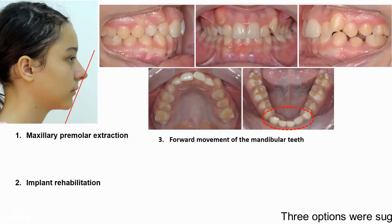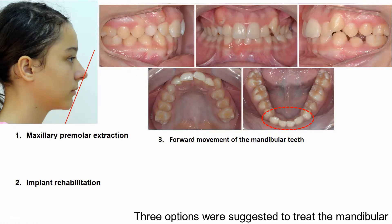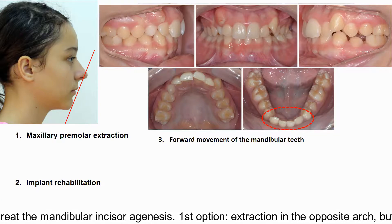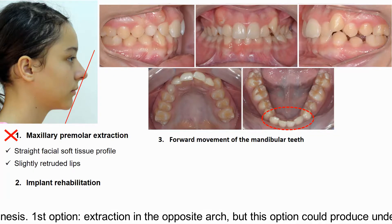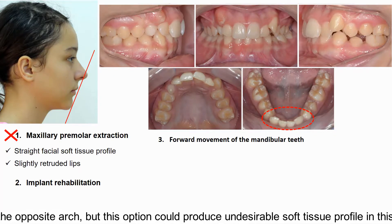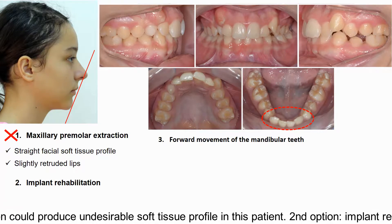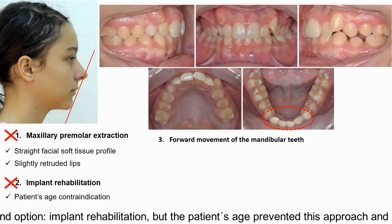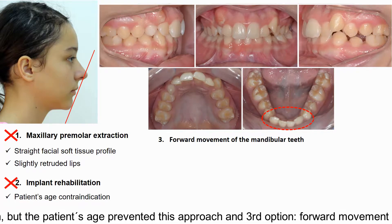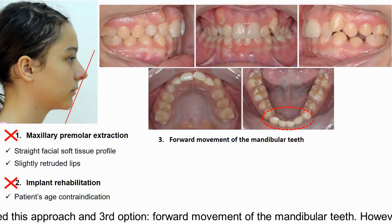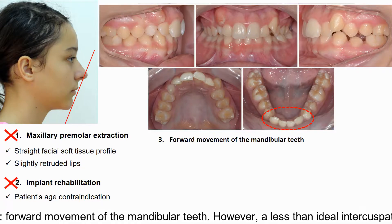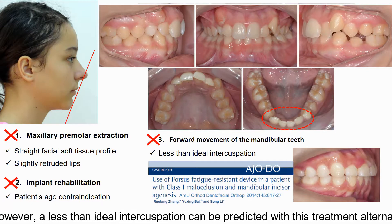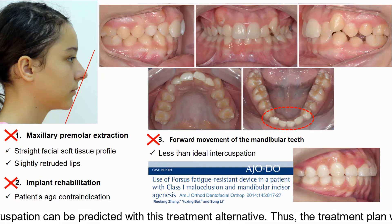Three options were suggested to treat the mandibular incisor agenesis. First option: extraction in the opposite arch, but this could produce undesirable soft tissue profile in this patient. Second option: implant rehabilitation, but the patient's age prevented this approach. Third option: forward movement of the mandibular teeth; however, a less-than-ideal intercuspation can be predicted with this treatment alternative.